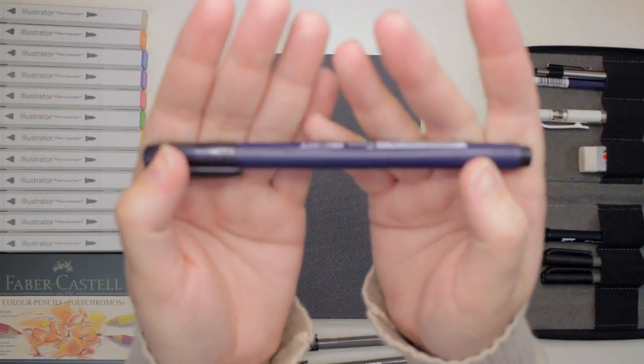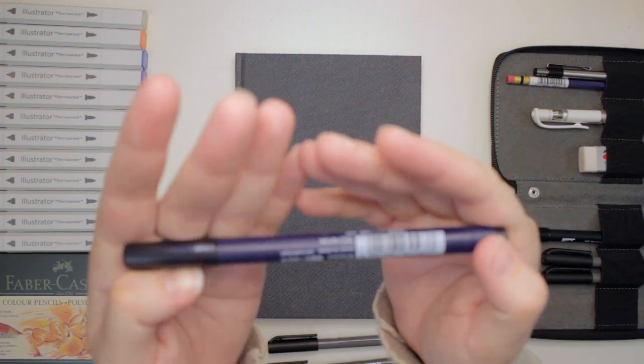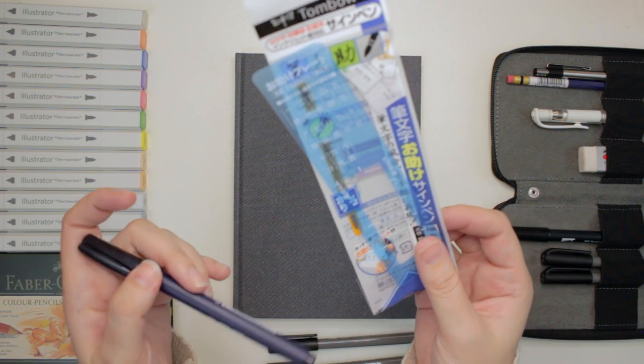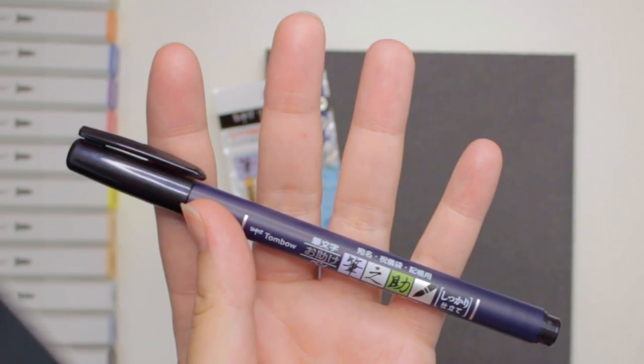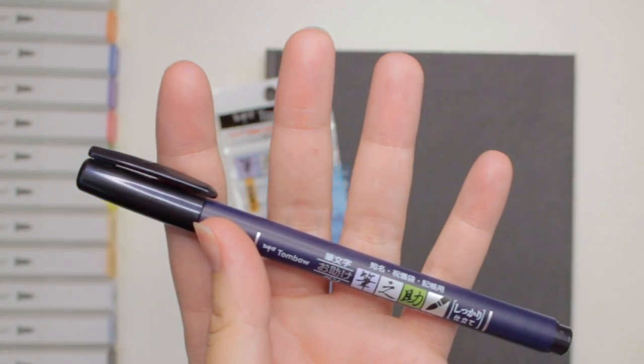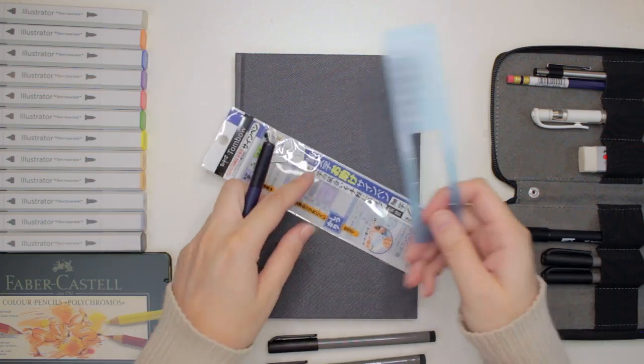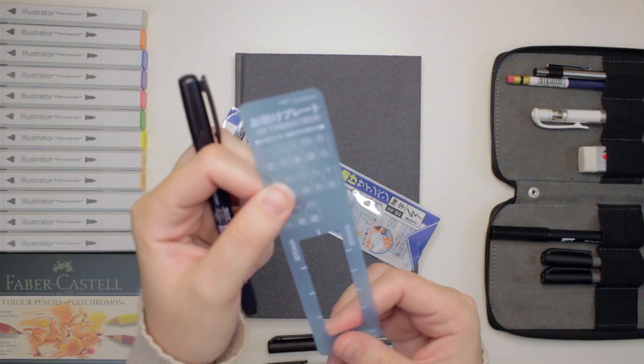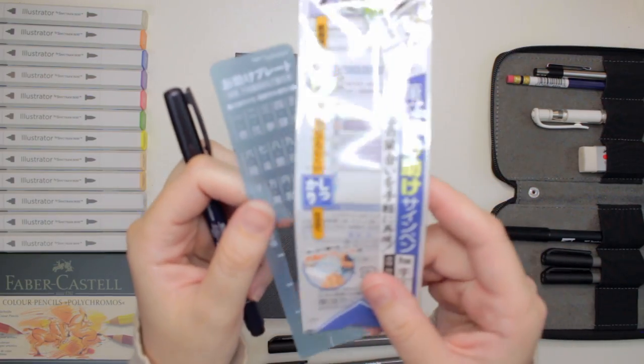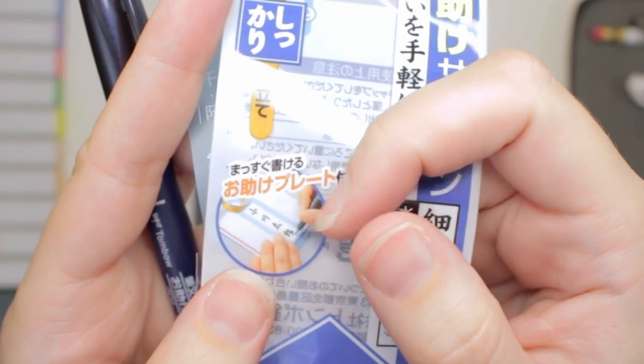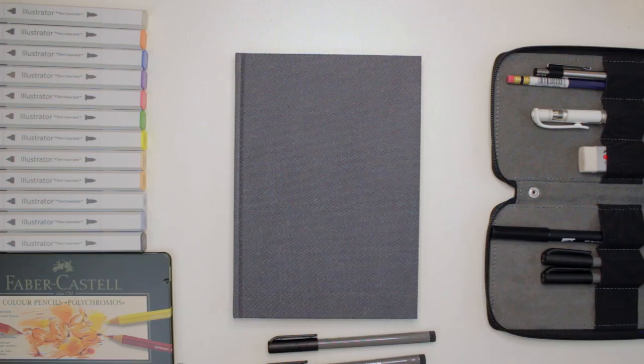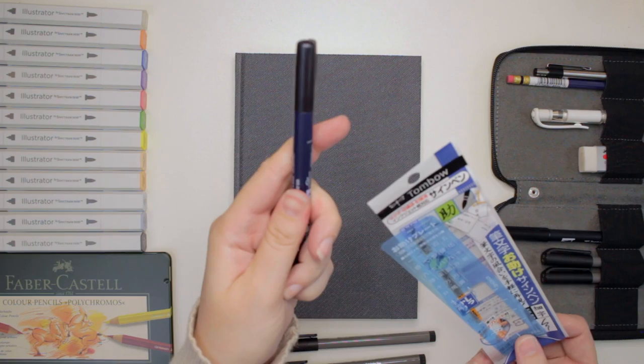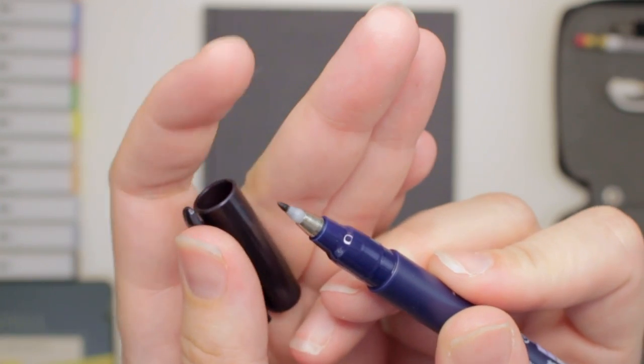Then I also did not show you this one, which is the Tombow one that I could not understand. So this is a Tombow Fudenosuke brush pen. Sorry if I pronounced that wrong. It actually came with this little measurement guide, which I'm assuming from this picture here is to do calligraphy. So you can have it all nice and spaced out properly. So this is obviously meant to be a calligraphy pen. So there's the brush nib.